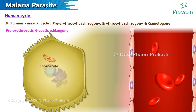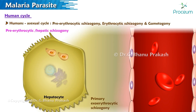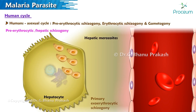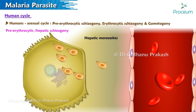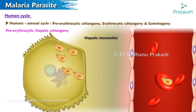Pre-erythrocytic or hepatic schizogony: the sporozoite infects hepatocytes within 30 minutes, then undergoes one cycle of primary exoerythrocytic schizogony and releases hepatic merozoites. Hepatic merozoites then invade the red blood cells and undergo erythrocytic schizogony.